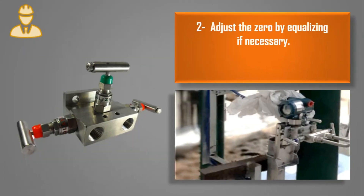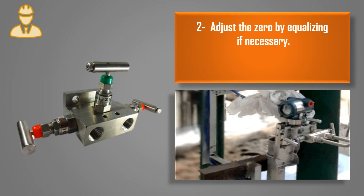The second step is to adjust the zero by equalizing if necessary. A three-way manifold valve is shown in the picture. The middle valve is the equalizing valve; the left and right valves are for LP and HP — LP means low pressure and HP means high pressure. How to adjust the zero by equalizing will be discussed later in the video.